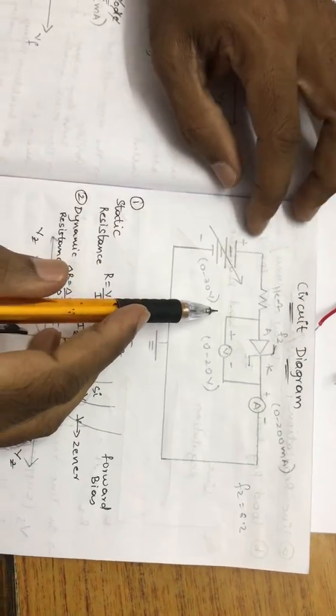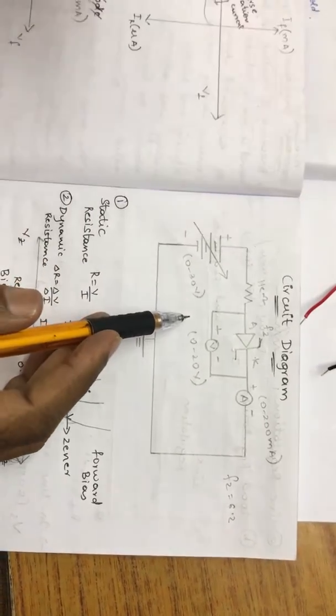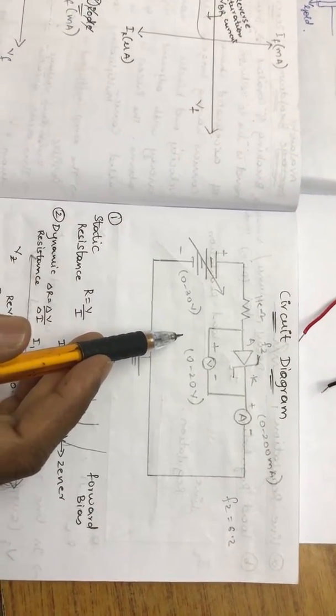The same circuit we had for forward bias and reverse bias VI characteristics. In this Zener diode, we need to plot the VI characteristics of the Zener diode.